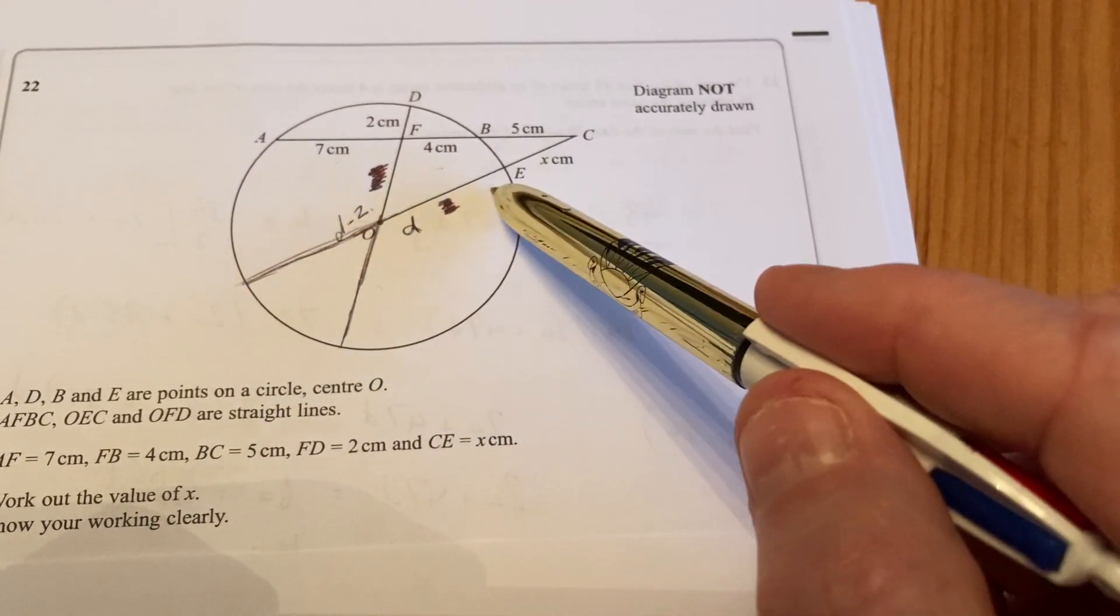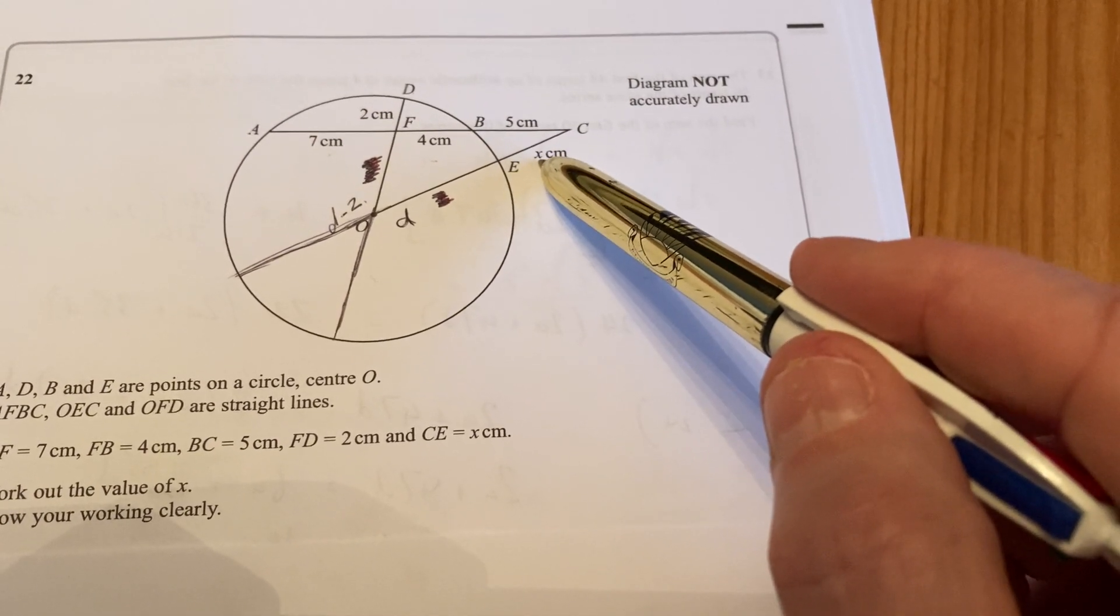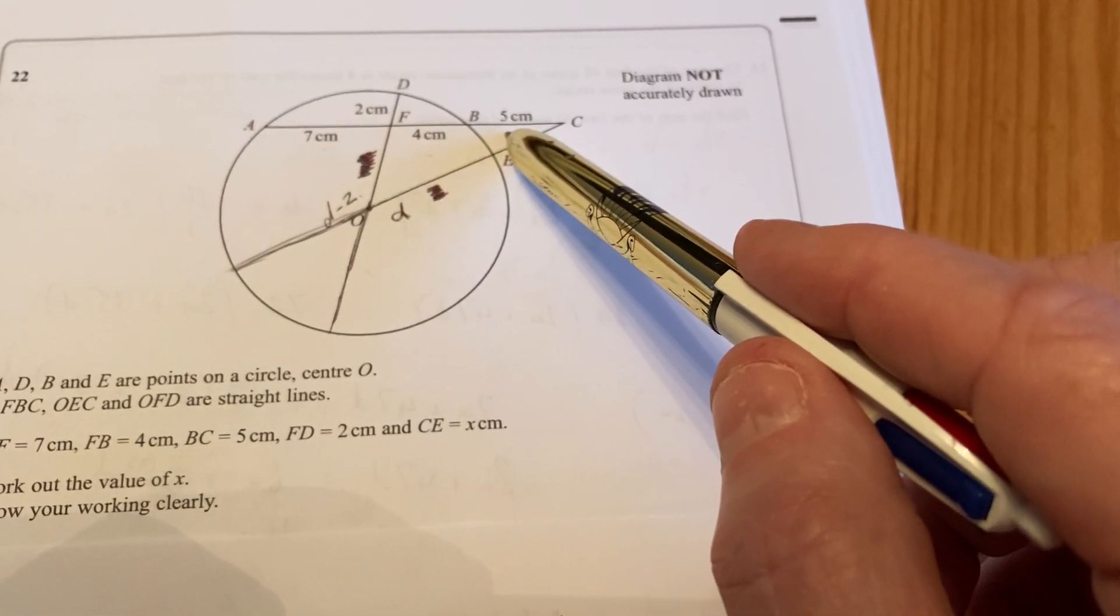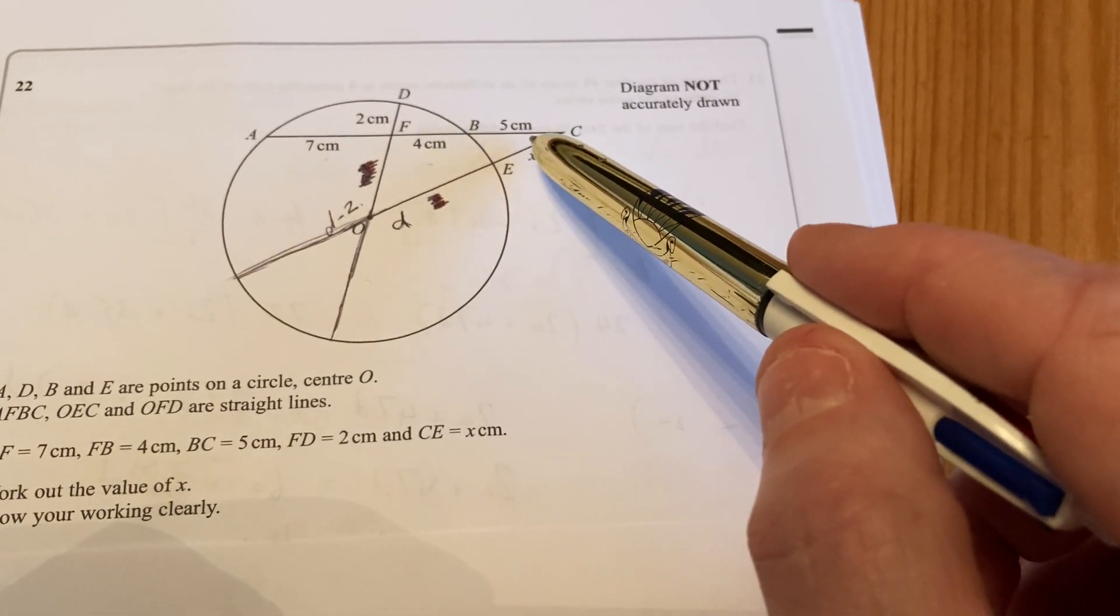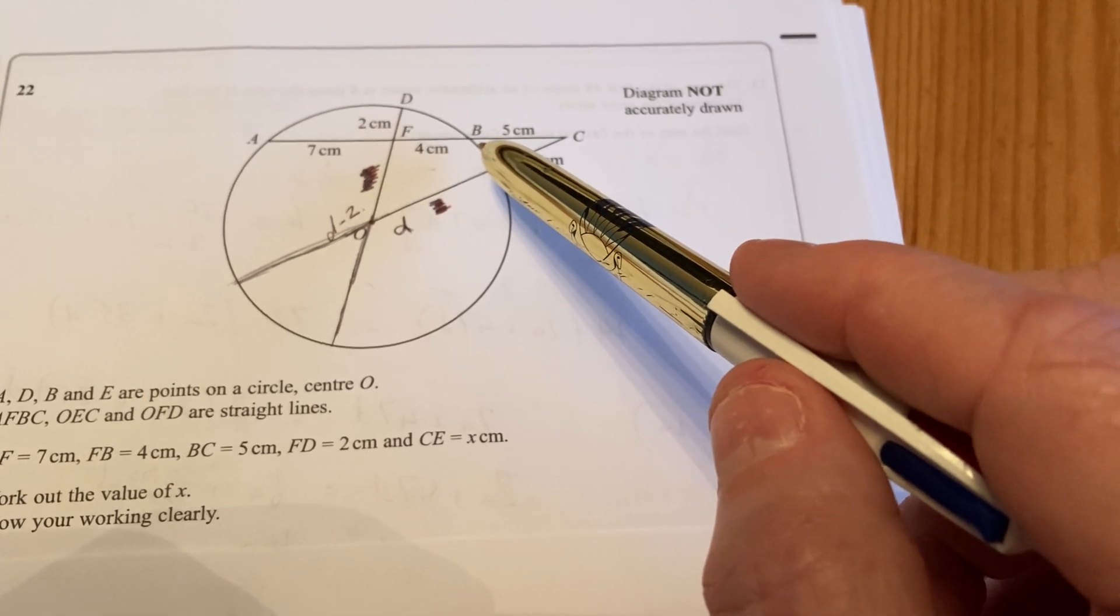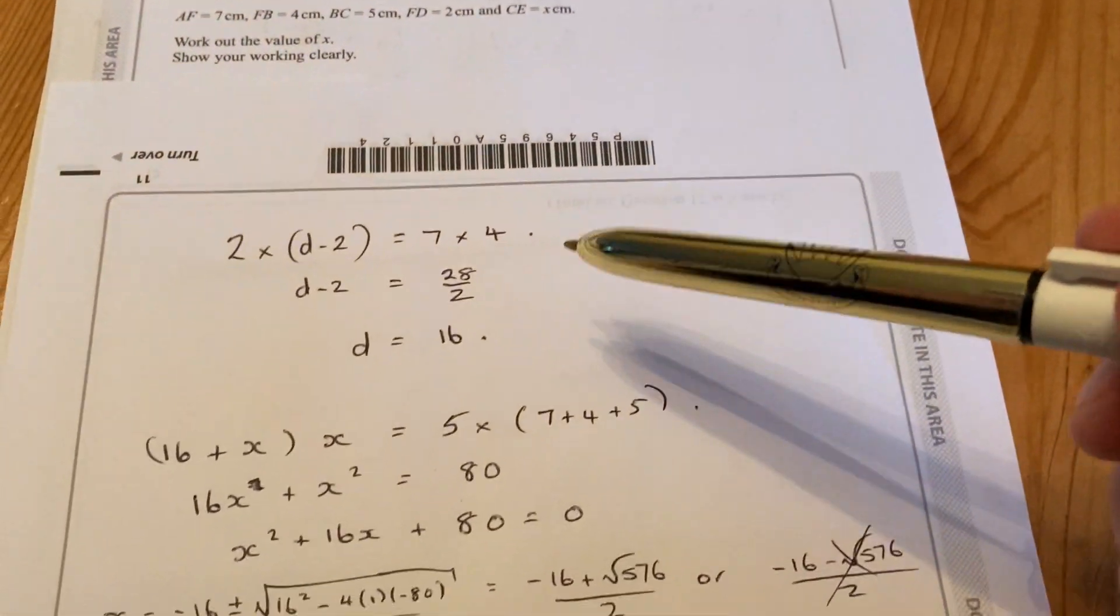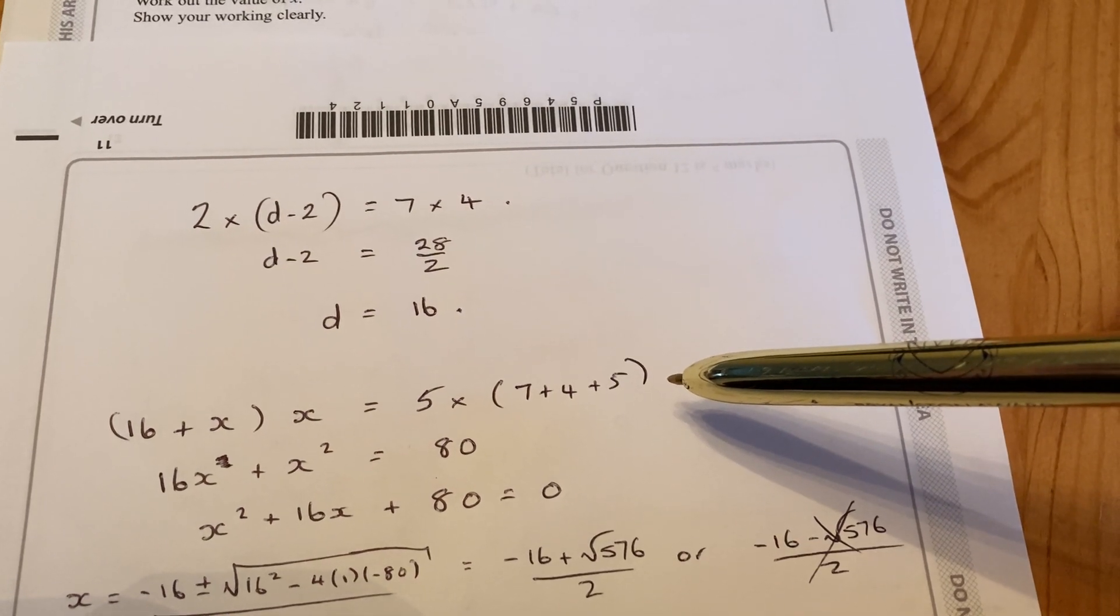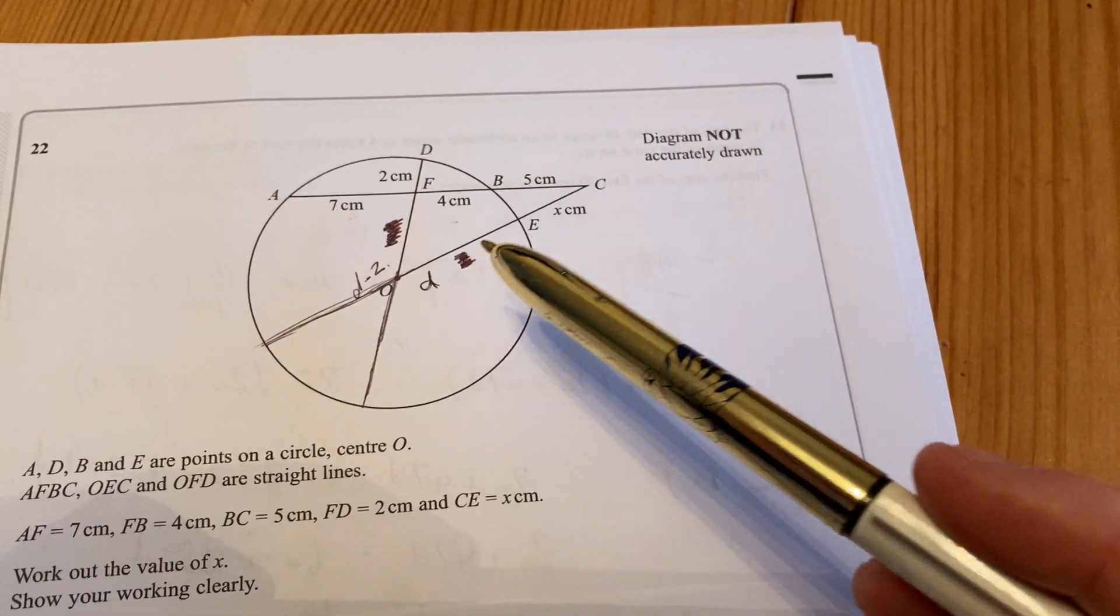So the whole length of this line is a diameter plus x times by x, the bit outside, is going to be equal to, well 7, 2 and 5 all together makes 14. So 5 times 14 is going to be equal to x times D plus x. Okay, so where have we gone here?